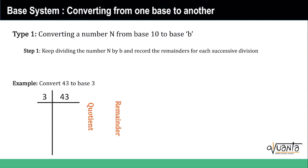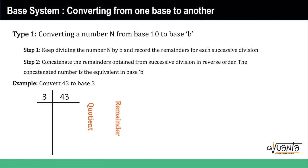The first thing you need to do is keep dividing the number N by the base you want to convert to, which is base b in this case. Then you record the remainders from each successive division. Once you have recorded the remainders, you concatenate them. Concatenate basically means stick them together.